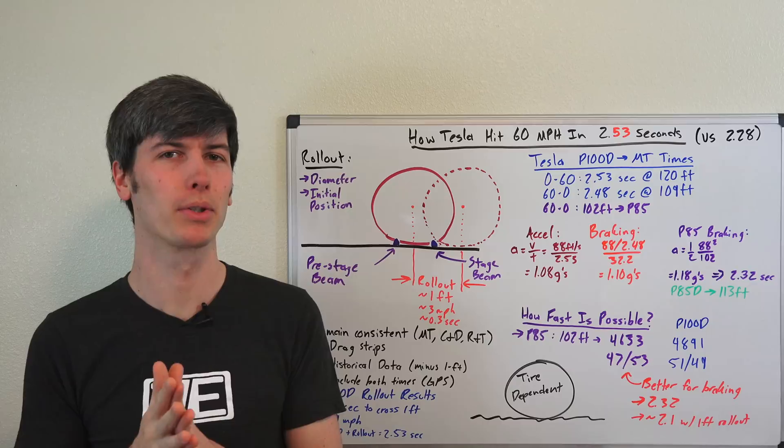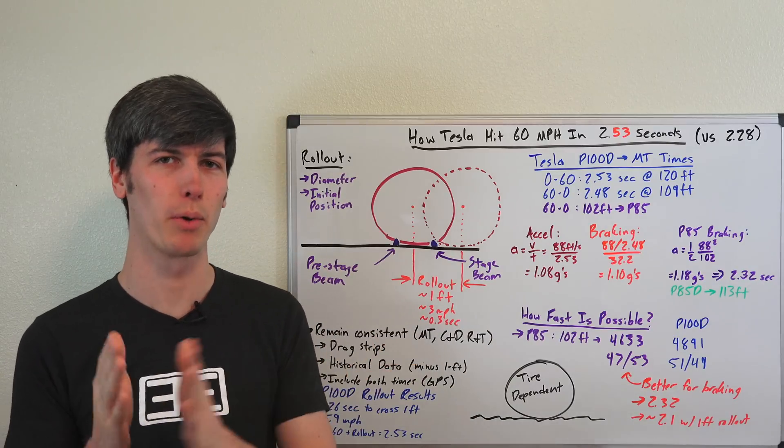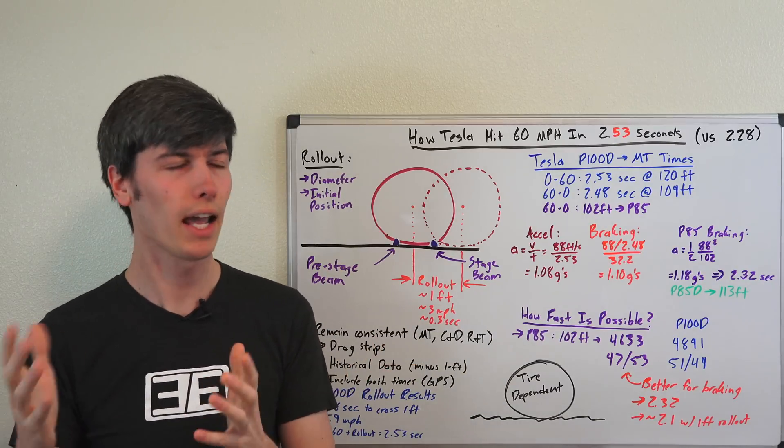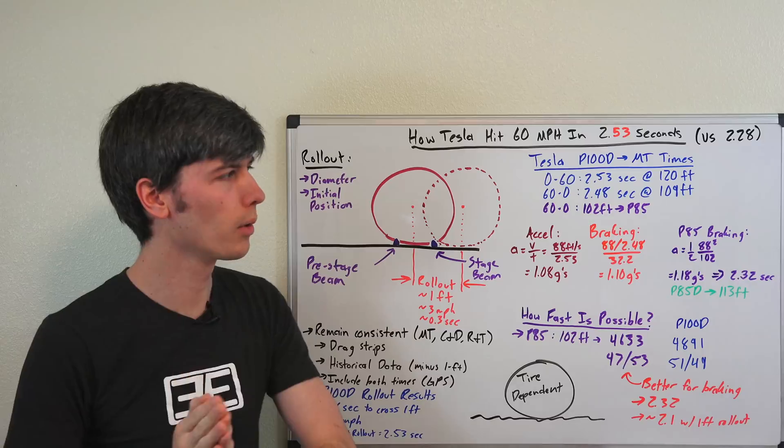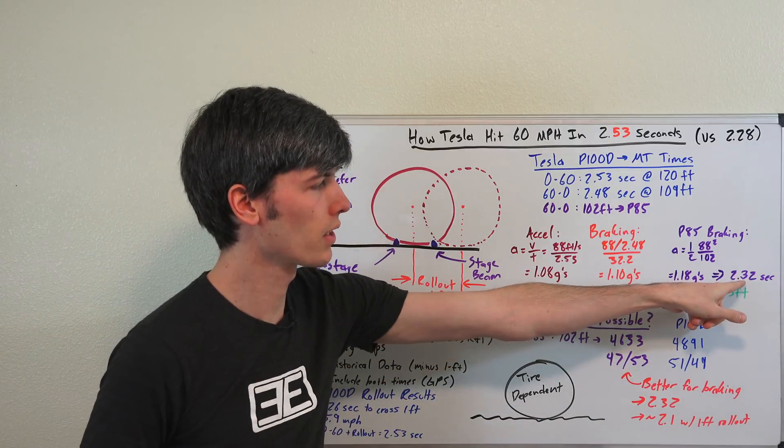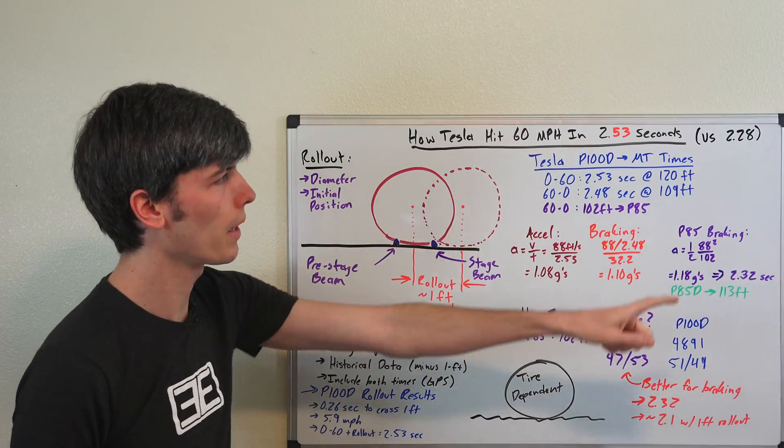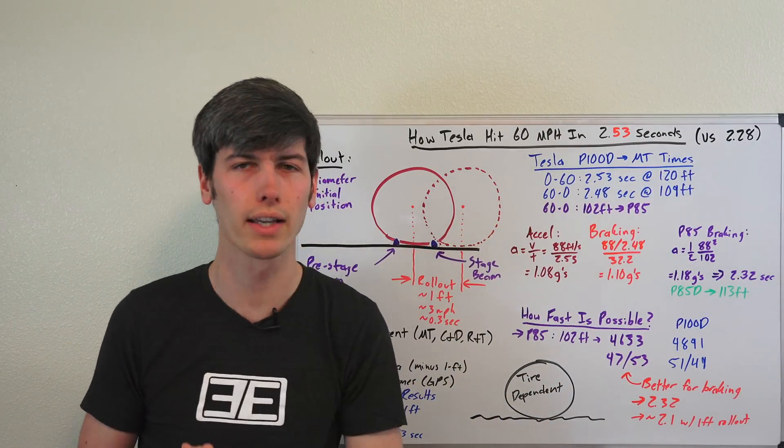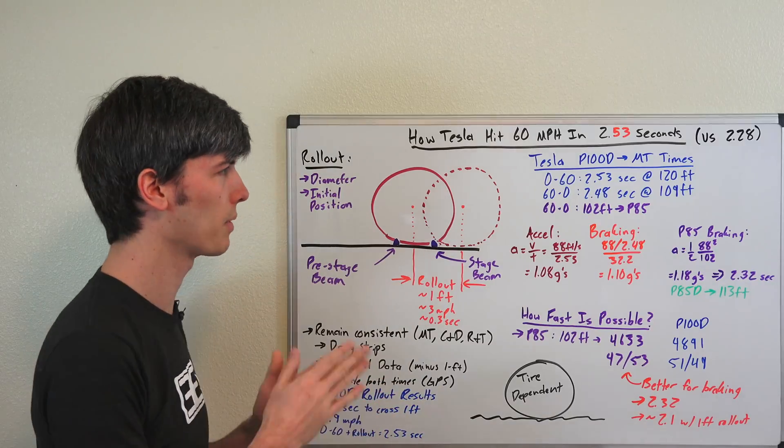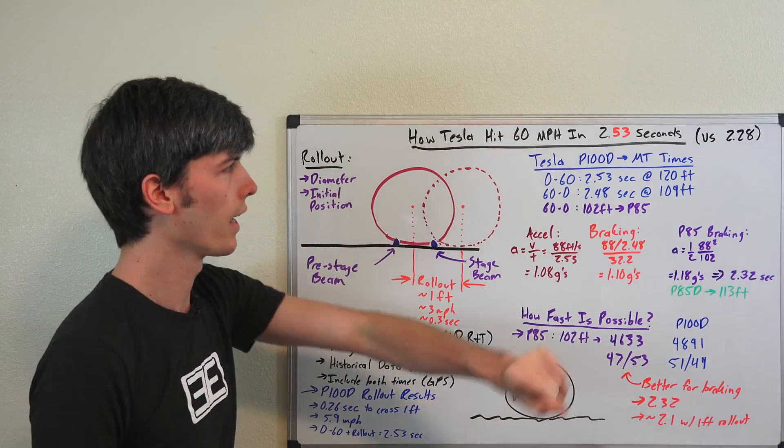Now shortly after publishing that video, Jason Kamisa and Frank Marcus of Motor Trend reached out to me and said the reason why your theoretical limit of 0-60 at 2.32 seconds is actually slower than our measured time of 2.28 seconds is because you are not including the amount of time it takes for one foot of rollout.